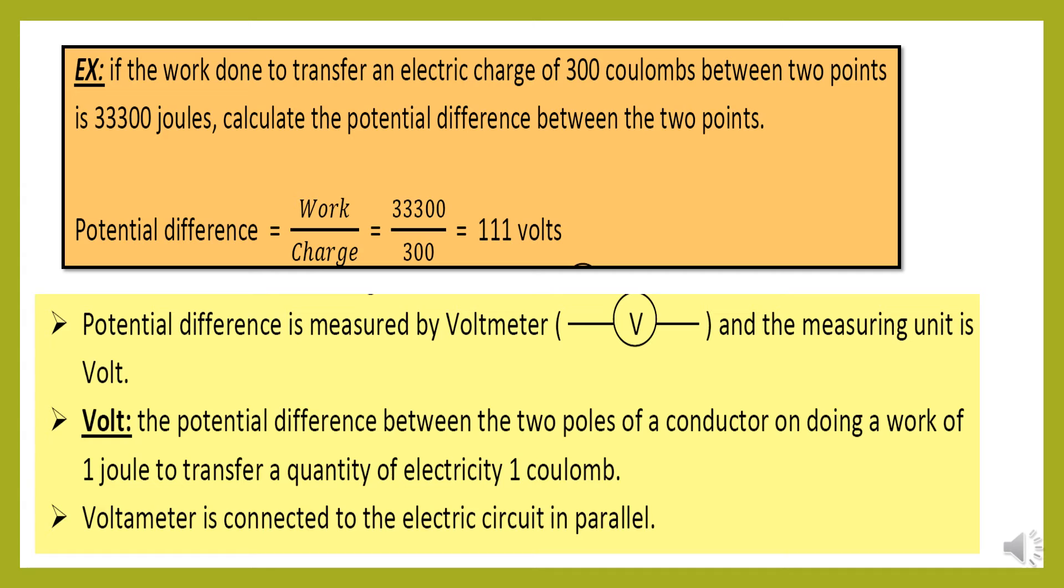Potential difference is measured by voltmeter, so the device is called voltmeter. This is the sample of voltmeter in electric circuits and the measuring unit is volt.